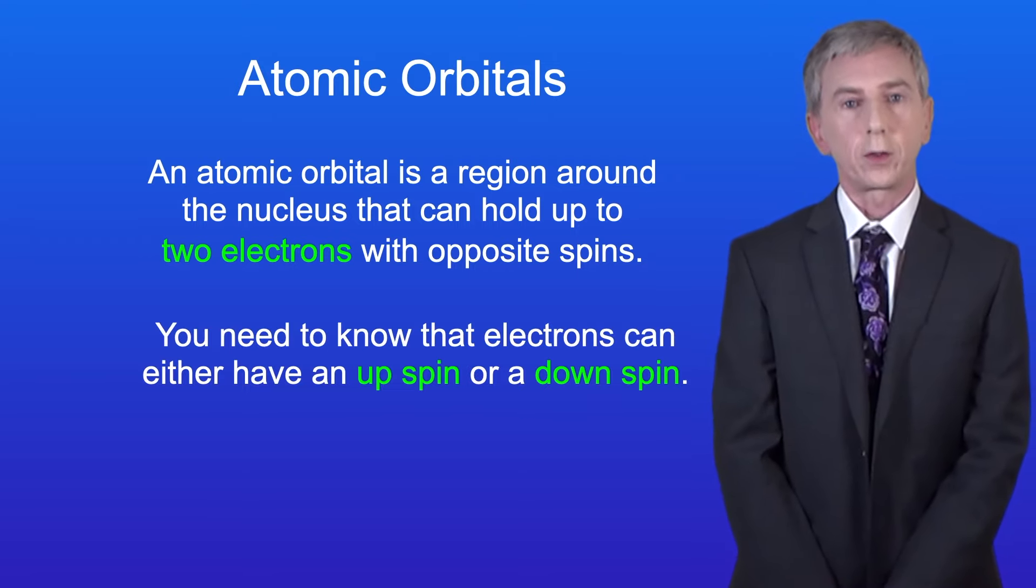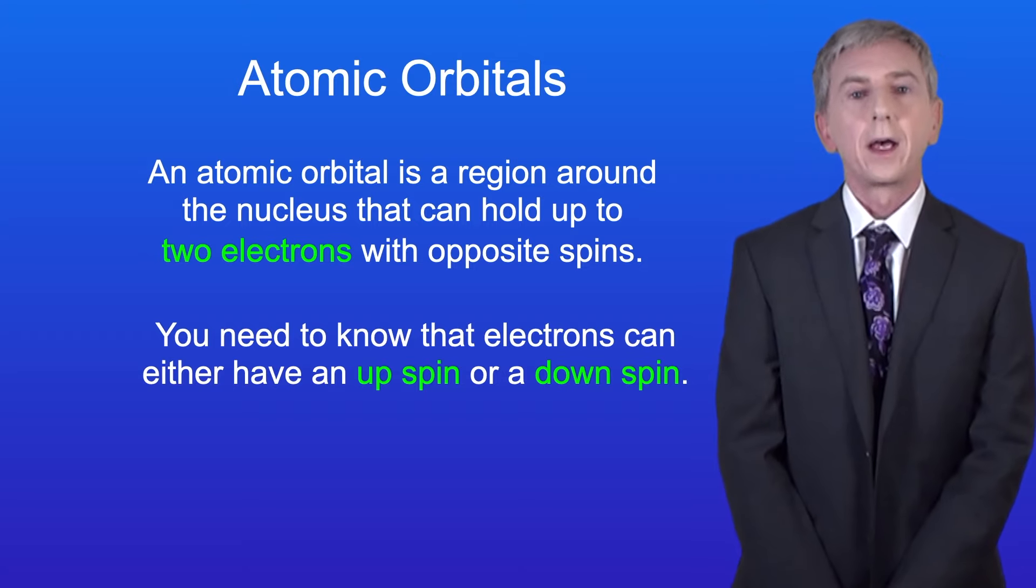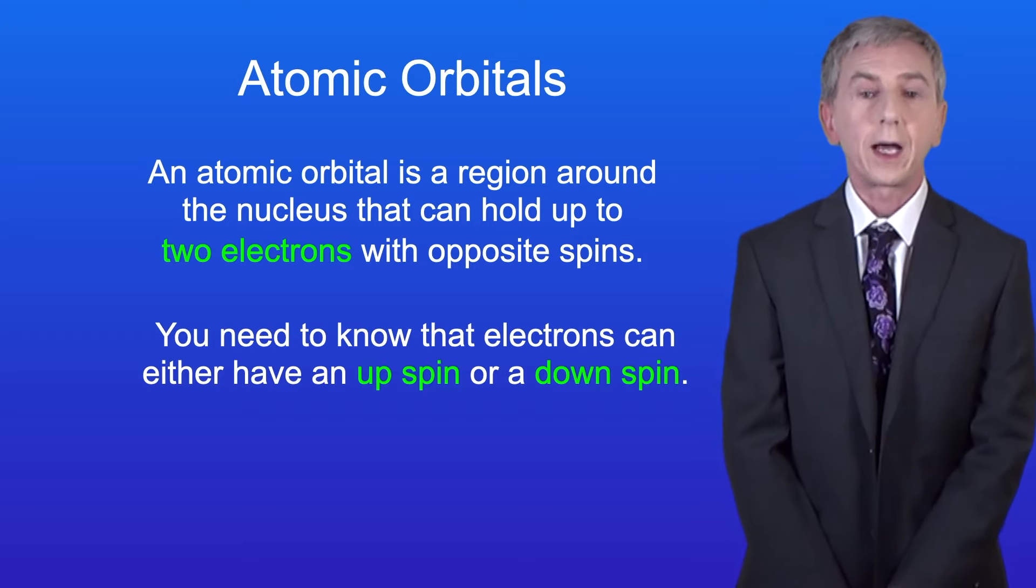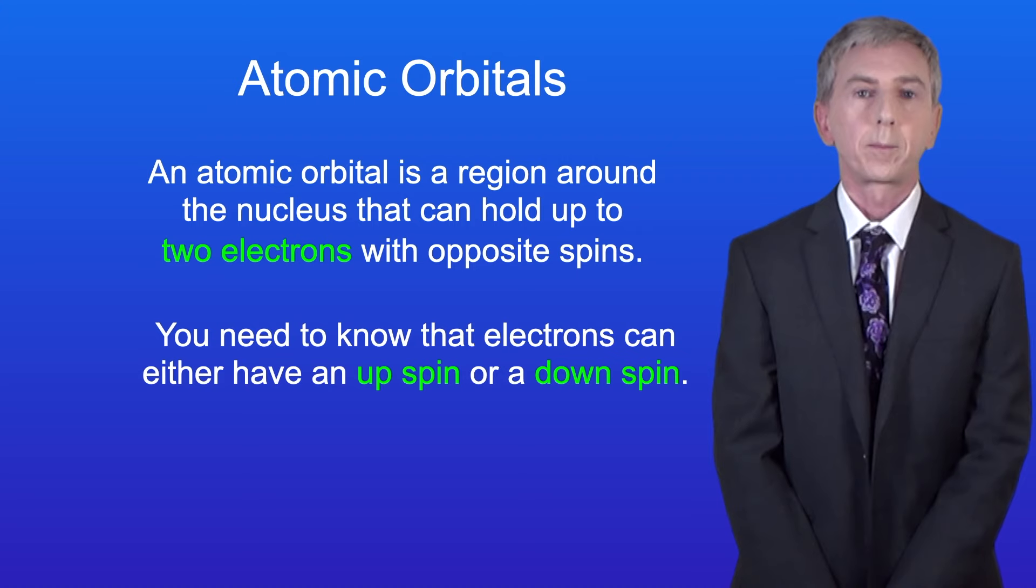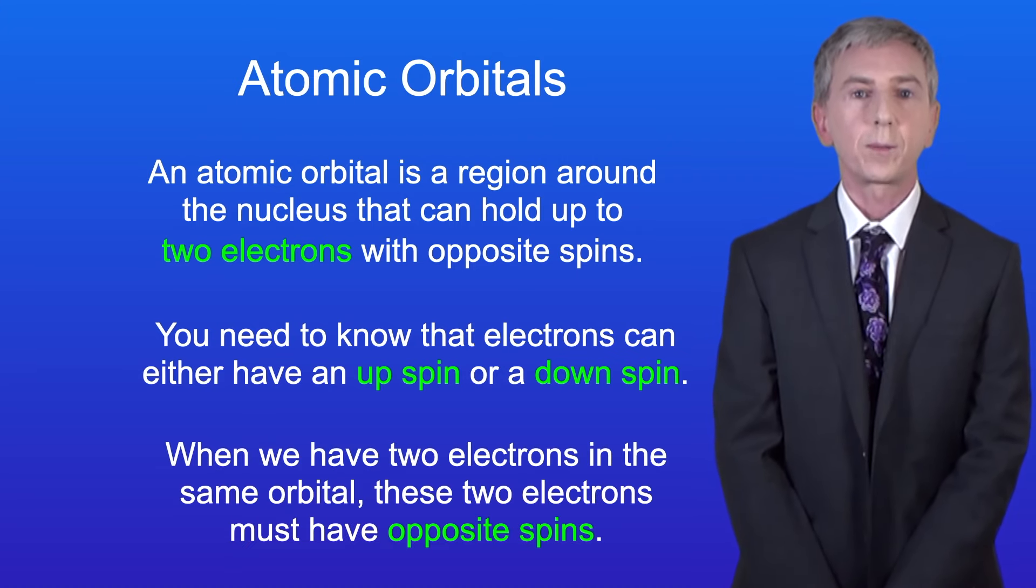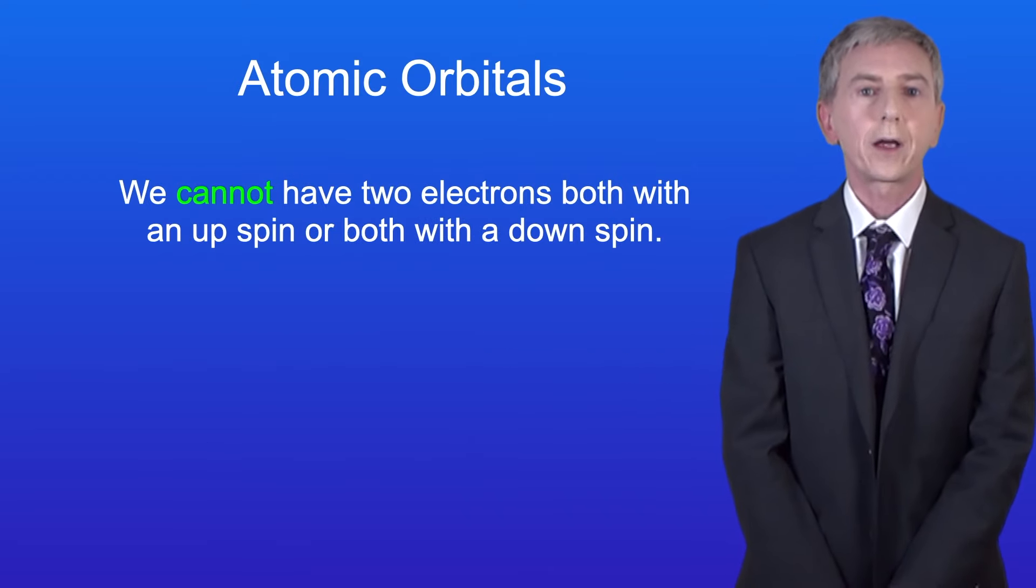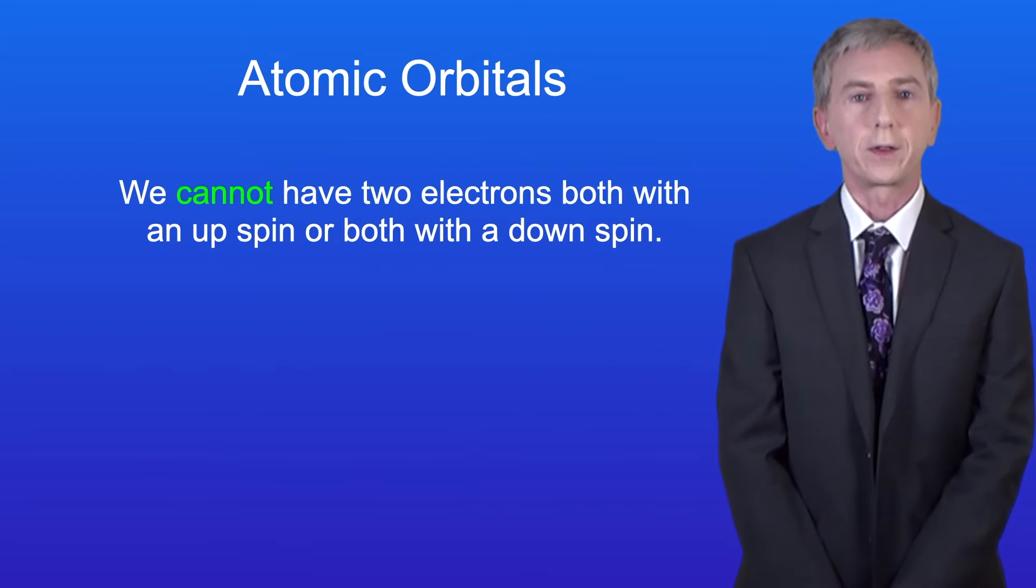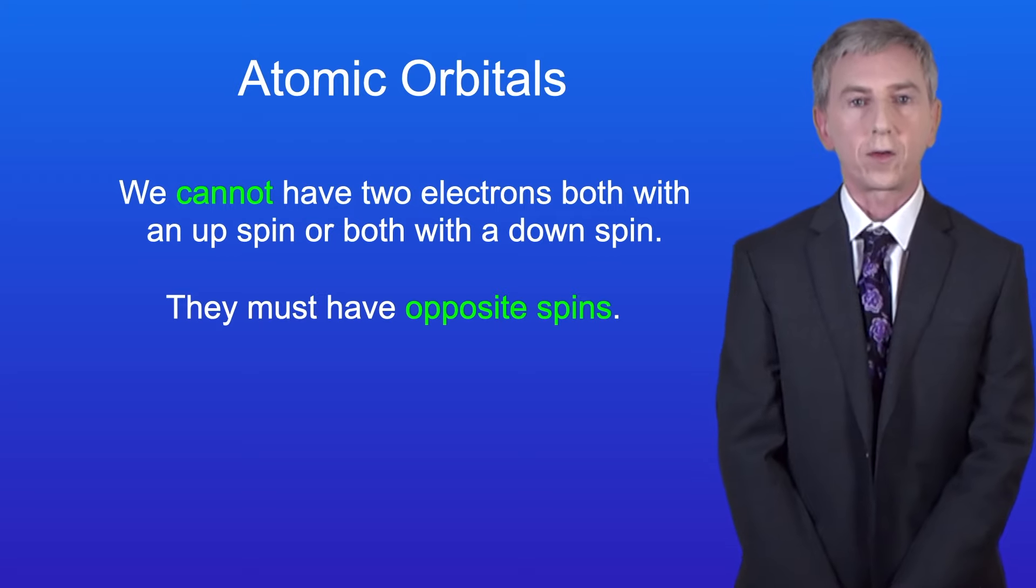Now for chemistry A-level, you're not required to know what spin is. However, you do need to know that electrons can either have an up spin or a down spin. When we have two electrons in the same orbital, these two electrons must have opposite spins. We cannot have two electrons both with an up spin or both with a down spin.